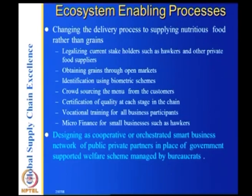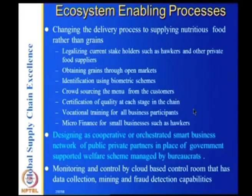Such a complex problem as supplying food to people is being designed and solved using the ecosystem framework. It is practicable and applicable — it is addressing the crucial problems of delivering nutritious food. It is nutritious because it is done in certified kitchens. We are solving the problem of transforming food from grains to cooked or pre-prepared food that is both fresh and nutritious. Monitoring and control is done by a cloud-based control system with data collection, mining, and fraud detection capabilities — with alarms sent to hawkers or monitors when fraud is detected.